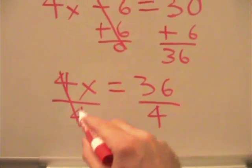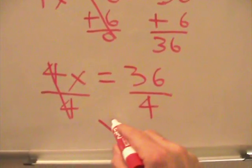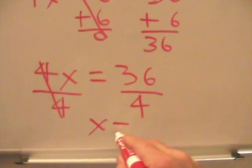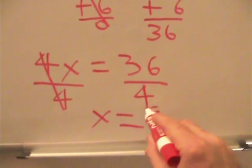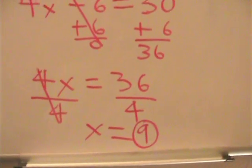This cancels out. We're left with x equals 36 divided by 4 is 9. And our answer is x equals 9.